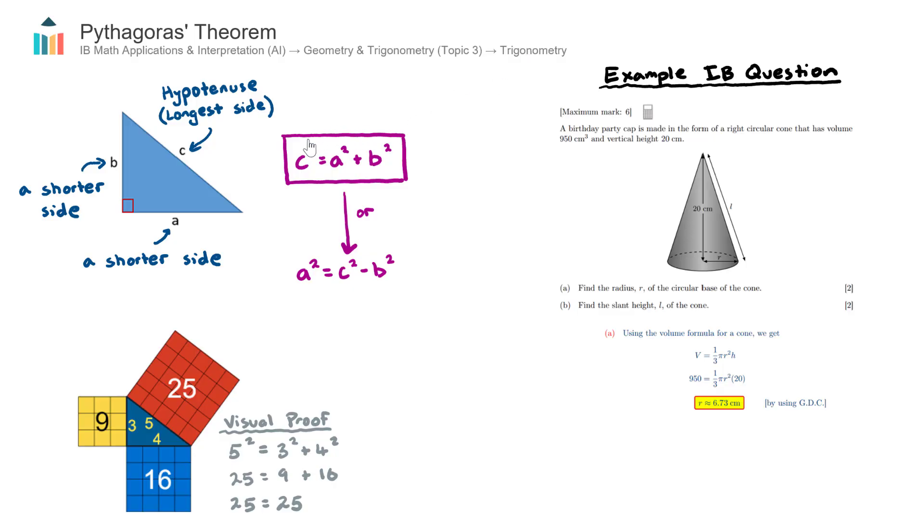Here is the theorem: c squared is equal to a squared plus b squared. Or if I was to read this in English, the longest side squared of a right-angled triangle, and we have a right-angled triangle here where c is the longest side, is equal to the sum of the squares of the other two sides, the two shorter sides.